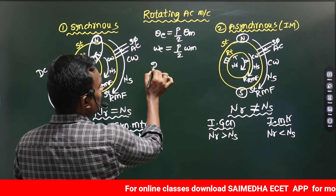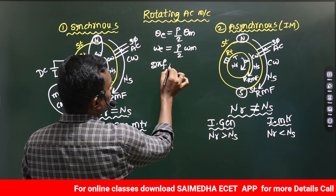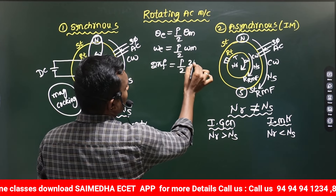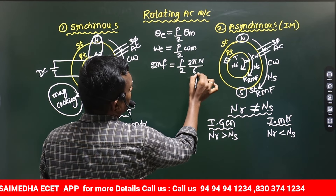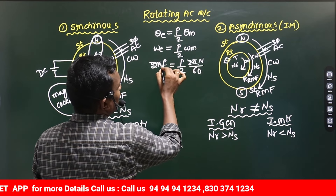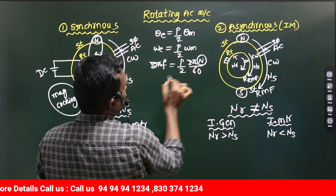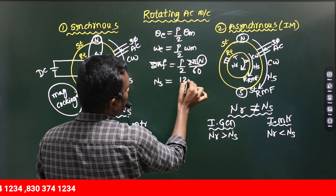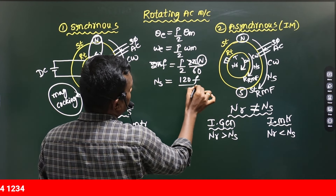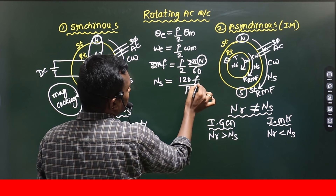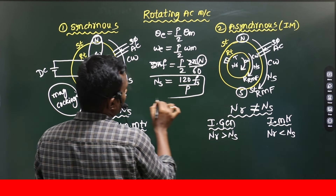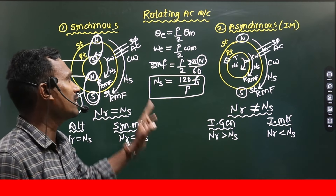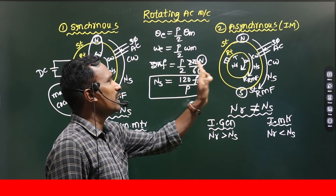Omega electrical is 2πF, and omega mechanical is 2πN/60. So 2πF = (P/2) × (2πN/60). The 2π cancels on both sides. Solving for N, the Synchronous speed Ns equals 120F divided by P.